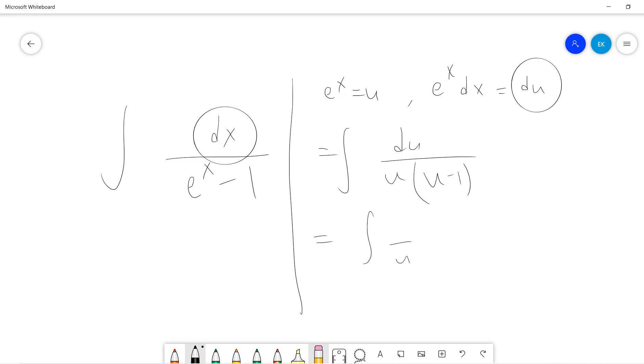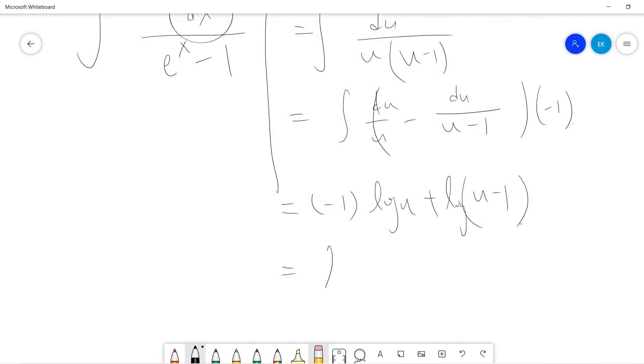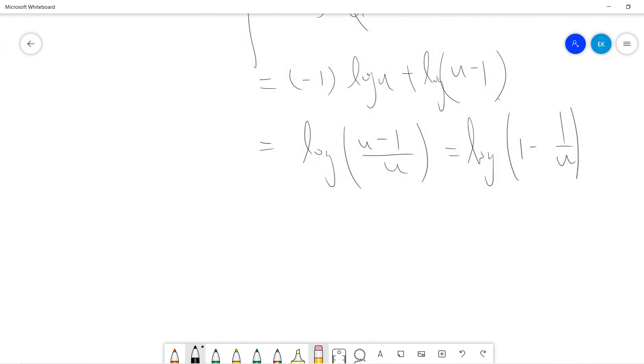Right, and you take a minus sign, okay. So the answer should be minus ln u plus ln(u minus 1). Okay, so you get ln(u minus 1 divided by u), which is ln(1 minus 1 divided by u) plus constant.